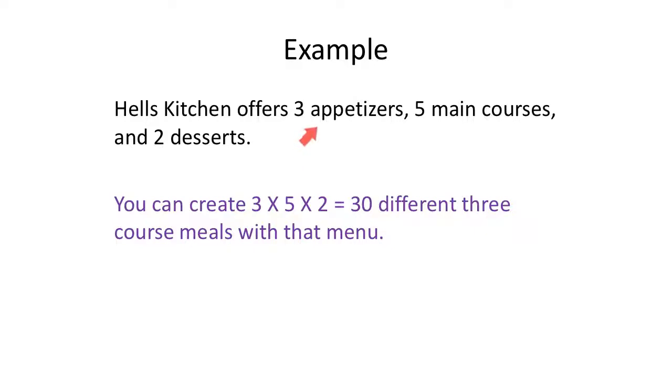So you can create, first you pick an appetizer, so three options. And then you pick a main course, five options. And then you pick a dessert, two options. All right, it's not or, it's and then. So three times five times two is 30 different three course meals with that menu.